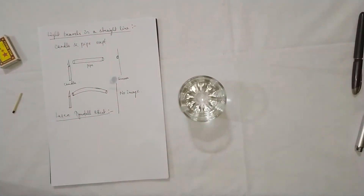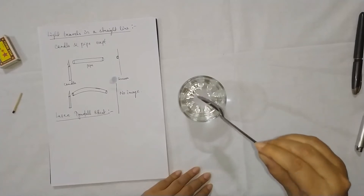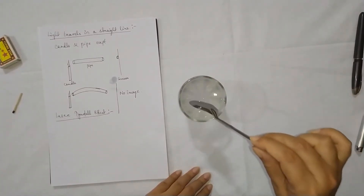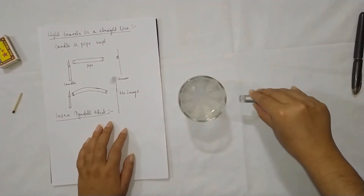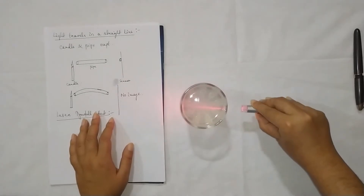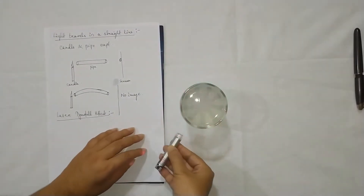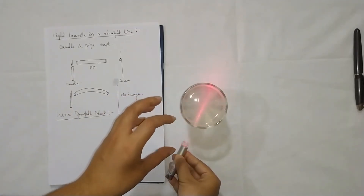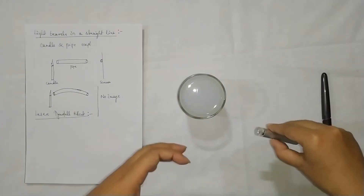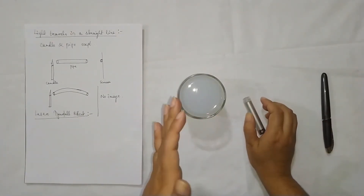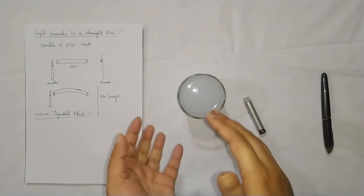Now let's add just a few drops of milk into the water and make a solution. Previously the path was not visible, but now you can see the path of the light. I am doing it from various sides — you can see the path of the light, which means the solution is scattering the light in various directions. We can see the path, and we will use this idea to conclude that light travels in a straight line.